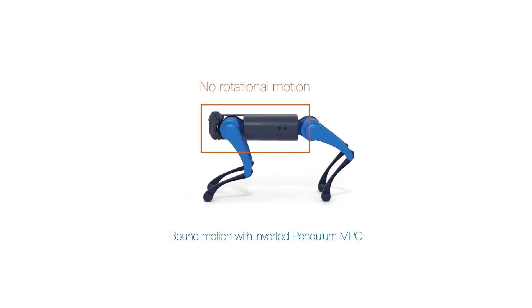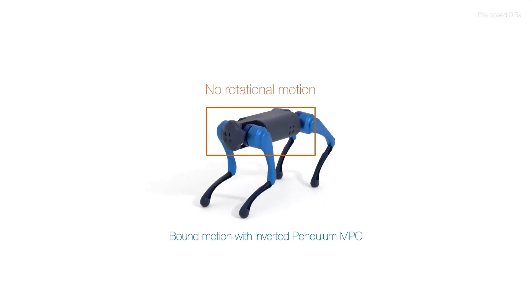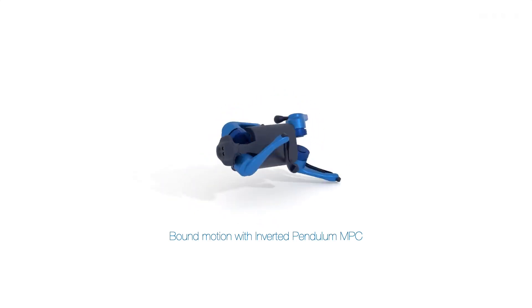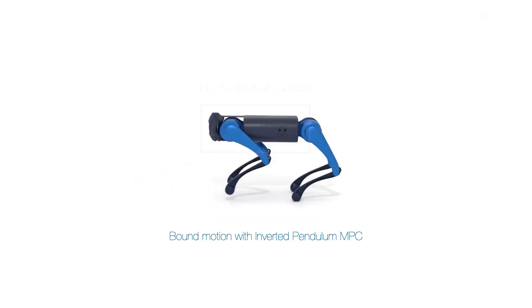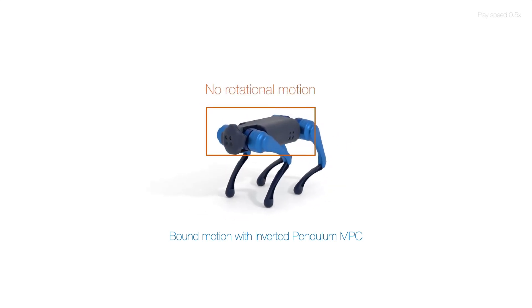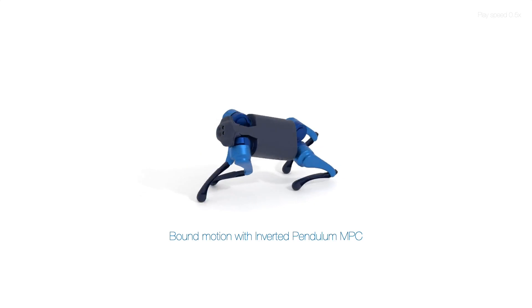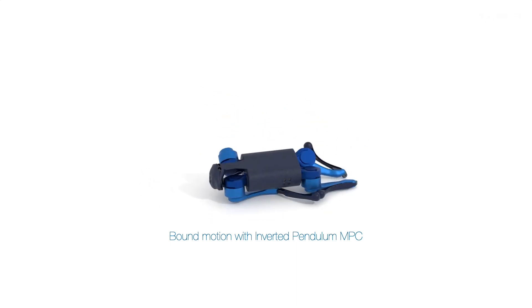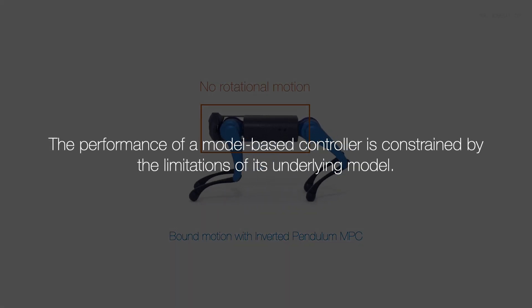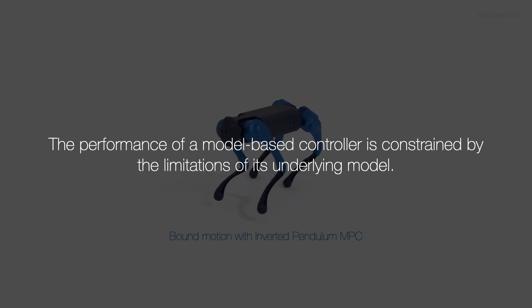However, it often constrains the controller's versatility and adaptability due to excessive reliance on assumptions and overly simplified models. For example, because of the inherent limitation of the underlying model, namely the inverted pendulum model, this motion controller easily fails with motions where body rotation is crucial for stability. In short, the performance of a model-based optimal controller is constrained by the limitation of its underlying model.